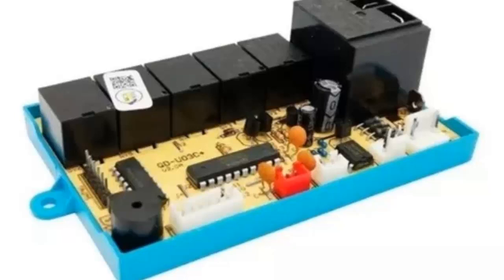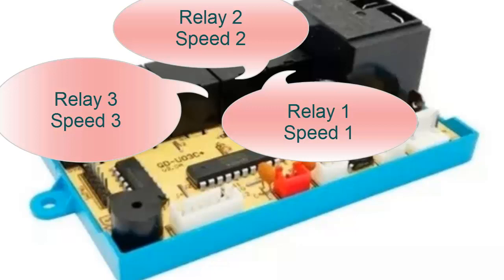On the screen is displayed the electronic board of an air conditioner that utilizes a relay system to control its operation and fan speed. In this case, multiple relays are observed, as one must be used to control each speed of the fan motor.